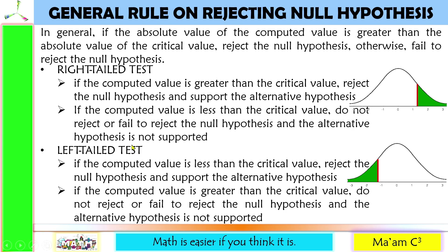For a left-tailed test, if the computed value is less than the critical value — meaning it is on the left of the critical value — it lies within the rejection region, so we reject the null hypothesis and support the alternative hypothesis. If the computed value is greater than the critical value, it is on the non-rejection region, so we fail to reject and the alternative hypothesis is not supported.